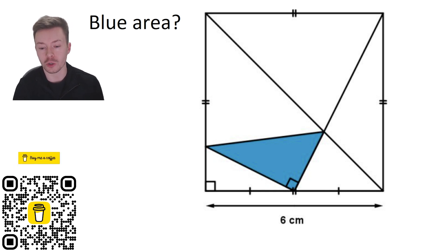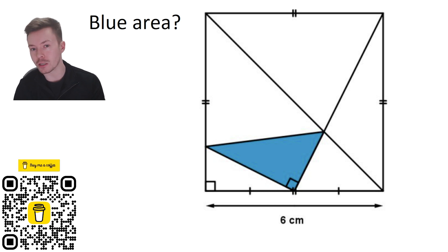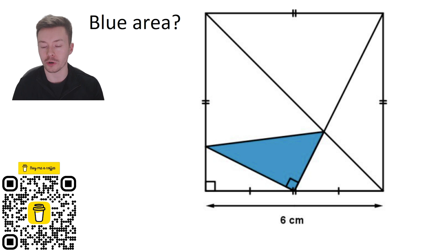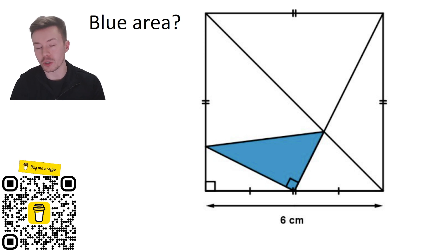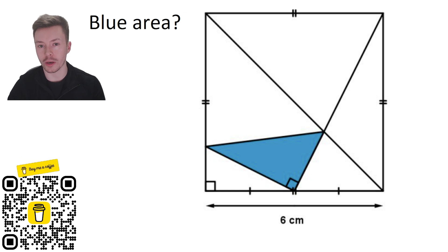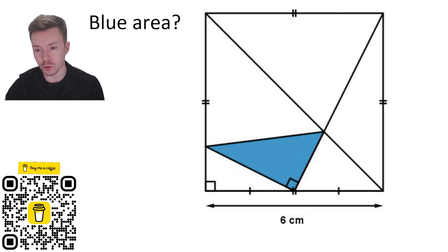One of the corners of this triangle meets the bottom of the square right in the middle, at the midpoint. We're going to use that information as well as the other corner of this triangle touching the diagonal of the square, and then one of the sides of the triangle going from the midpoint of the side of the square to the top right-hand corner of the square.